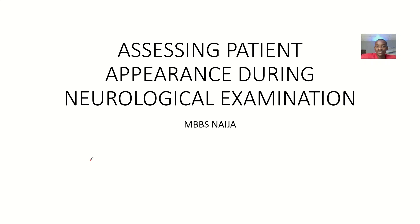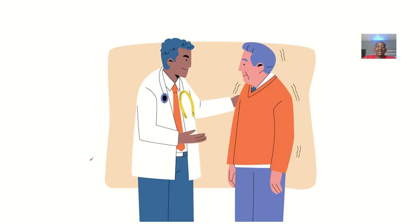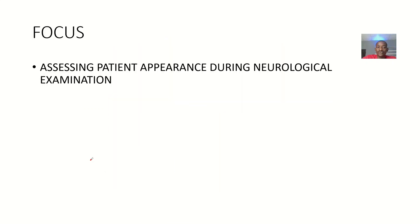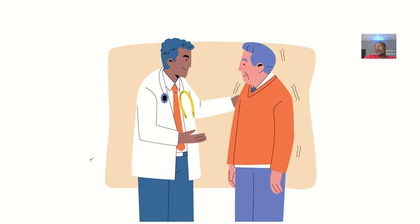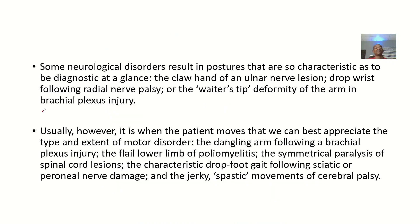I'm trying to look at how we can access patient appearance during neurological examination. In accessing patient appearance, it's simply you are trying to look at the overall — how does the patient look? Do they look dull or do they actually look vibrant during neurological examination? Some neurological disorders result in postures that are characteristic enough to be diagnosed at a glance.